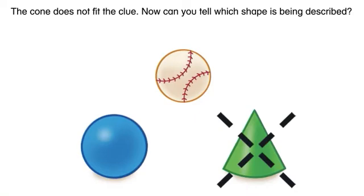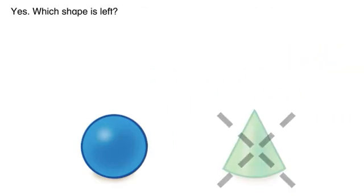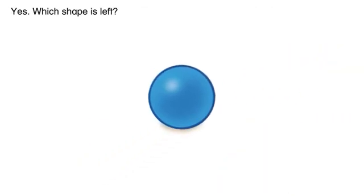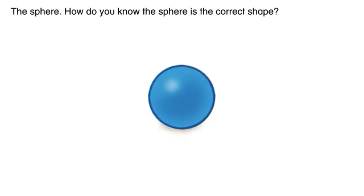Now can you tell which shape is being described? Yes. Which shape is left? The sphere. How do you know the sphere is the correct shape?